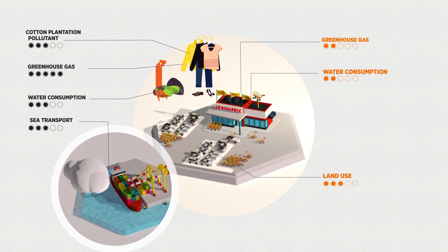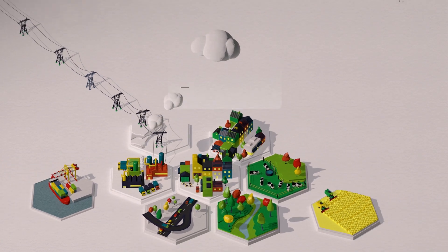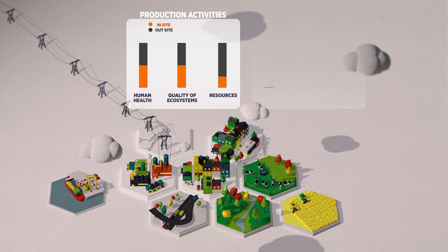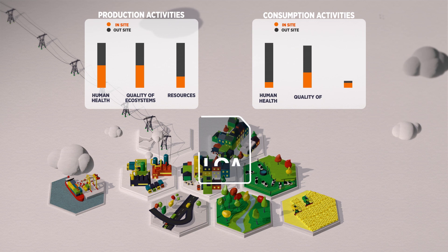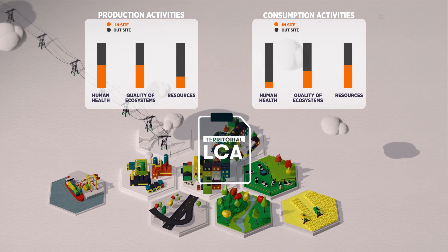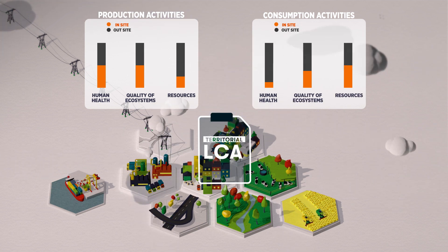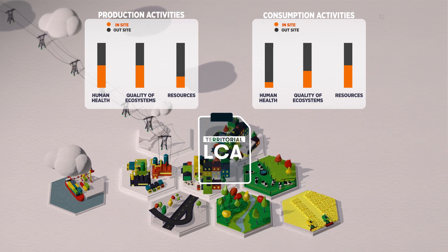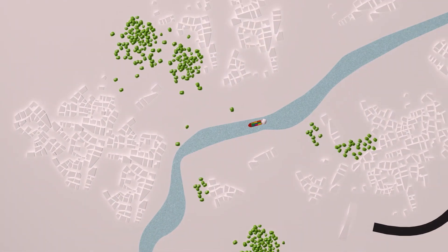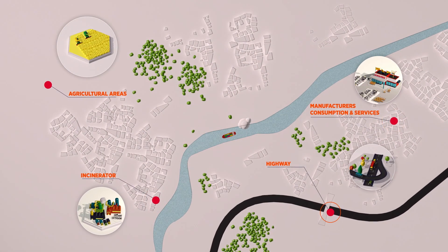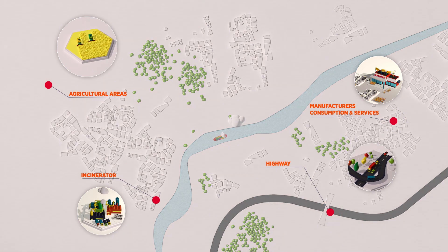Territorial LCA makes it possible to perform this diagnosis by quantifying the in-site and off-site part of the impact linked to the production and consumption activities of the territory. These impacts are grouped into damage to human health, to the quality of ecosystems and to resources. A map of the territory can also be produced to identify the biggest contributors to impact.